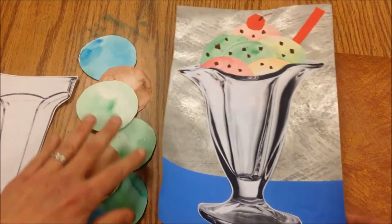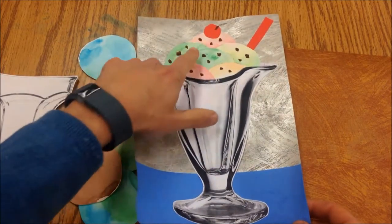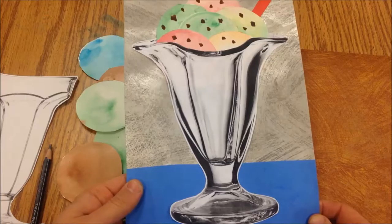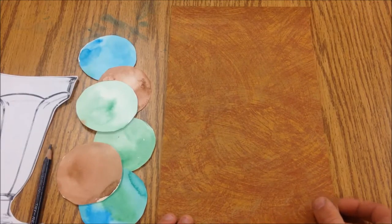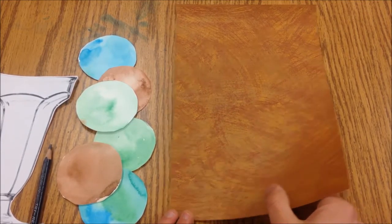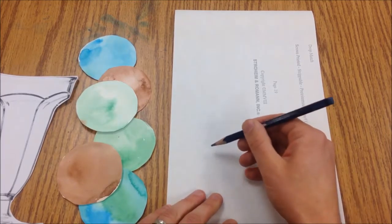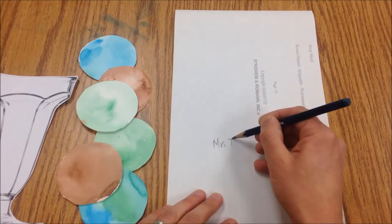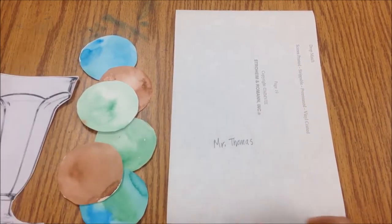We're going to take all of our pieces that we've cut out and create an ice cream composition here. First thing you're gonna do is you're gonna pick out a piece of wallpaper and on the back, the first thing I do is always the same: I take out my pencil and I write my name.